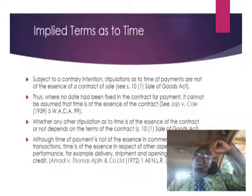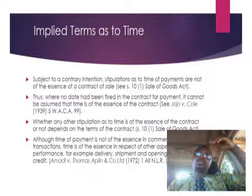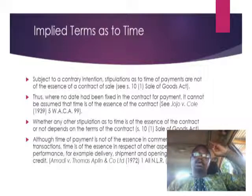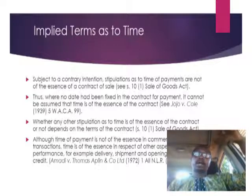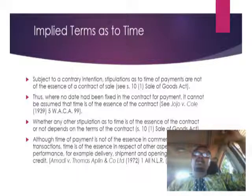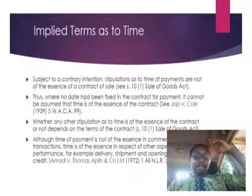The courts have recognized that in respect of certain obligations relating to performance, time will be of the essence. For example, delivery — failure to deliver within the time stipulated by the contract means time will be of the essence, and the innocent party will have the right to repudiate the contract. Also, failure to ship within time will give the innocent party the right to repudiate. And the opening of letters of credit in an international contract will also be of the essence of the contract.